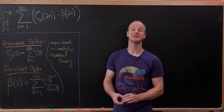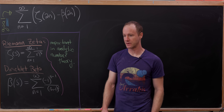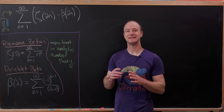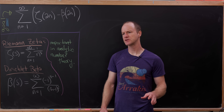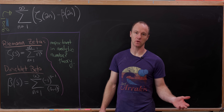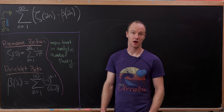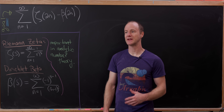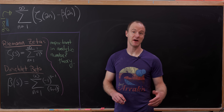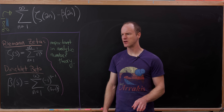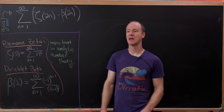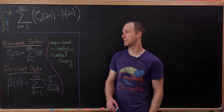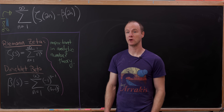Today we're going to look at a nice sum involving two functions that are very important in analytic number theory. You can generally decompose the study of number theory into three branches: elementary number theory, which covers things like Fermat's Little Theorem and congruences mod n; algebraic number theory, which uses abstract algebra to study rings of integers over field extensions; and analytic number theory, which uses the methods of analysis to explore number theoretic ideas.